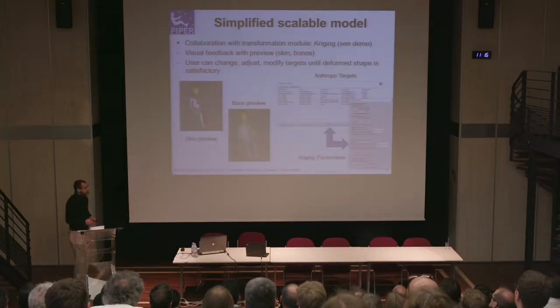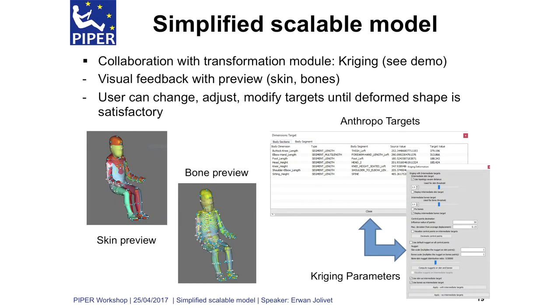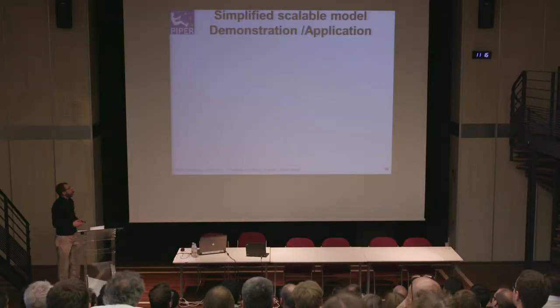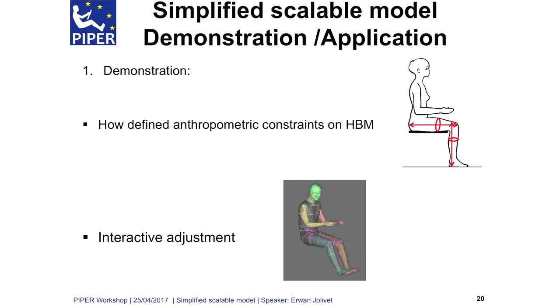Using the same module, we can have a preview of what the result of the deformation will be — using a preview of the skin or of bone. We can edit target values and put in manually some new values to adjust the target or the shape of the deformation. We can also play with meshing parameters to improve the shape of the deformed model. I will make two small demonstrations: first, how we can define such measurements on the human body model; and second, how we can iteratively adjust values and parameters to get a good quality deformation result.